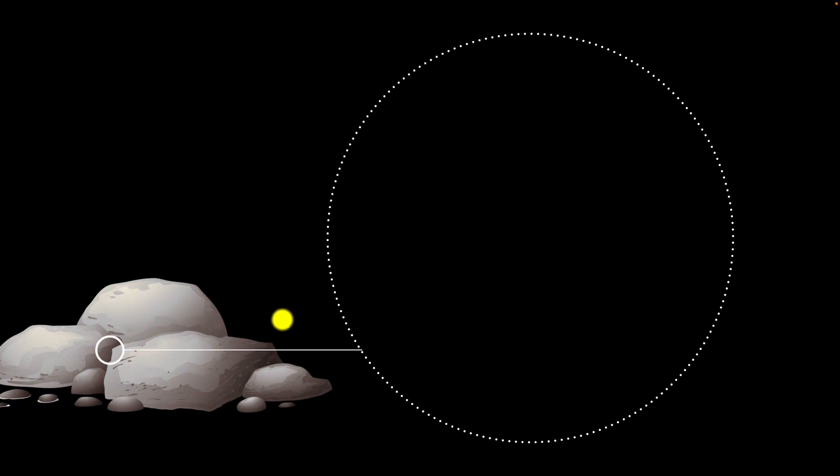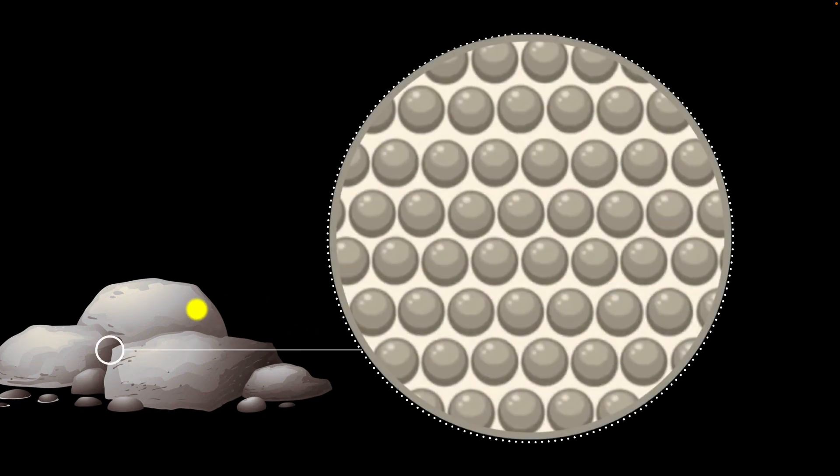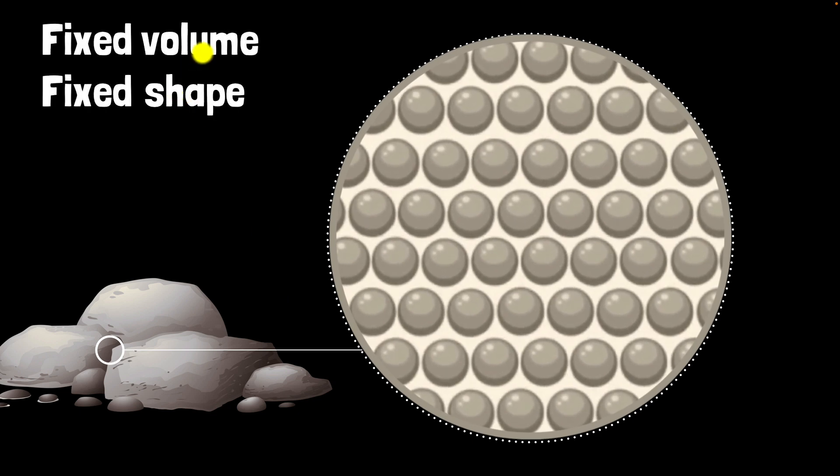If you could zoom in, what would we see? Well, remember that all matter around us is made of tiny particles like atoms and molecules. So here, if you could zoom in, you would actually see these atoms and molecules pretty much locked in place. They're wiggling around, but if you see, look, they are pretty much locked.